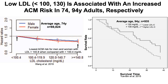What about 94-year-olds? This data comes from 935 subjects with an average age of 94 years. In this survival curve, the solid black line represents people with LDL greater than 130, and the dashed line represents those with LDL less than 130, over a three-and-a-half-year follow-up. There was better survival for 94-year-olds with higher LDL — greater than 130 — compared with those who had LDL less than 130.